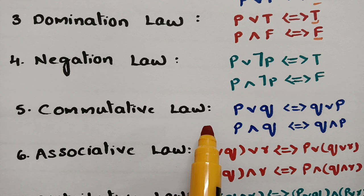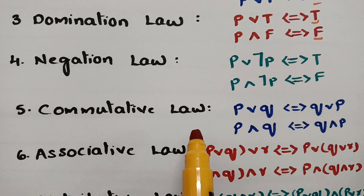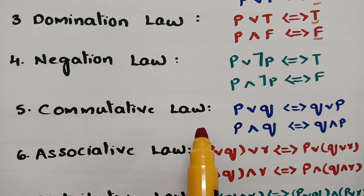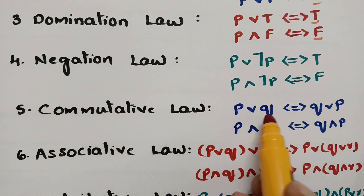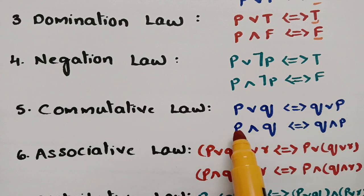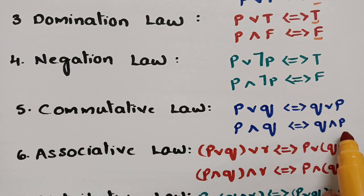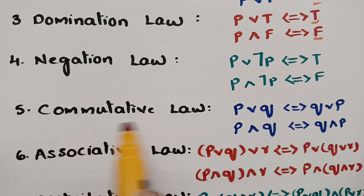For the commutative law, just like a times b equals b times a in arithmetic, here p OR q equals q OR p, and p AND q equals q AND p. This is the commutative law.